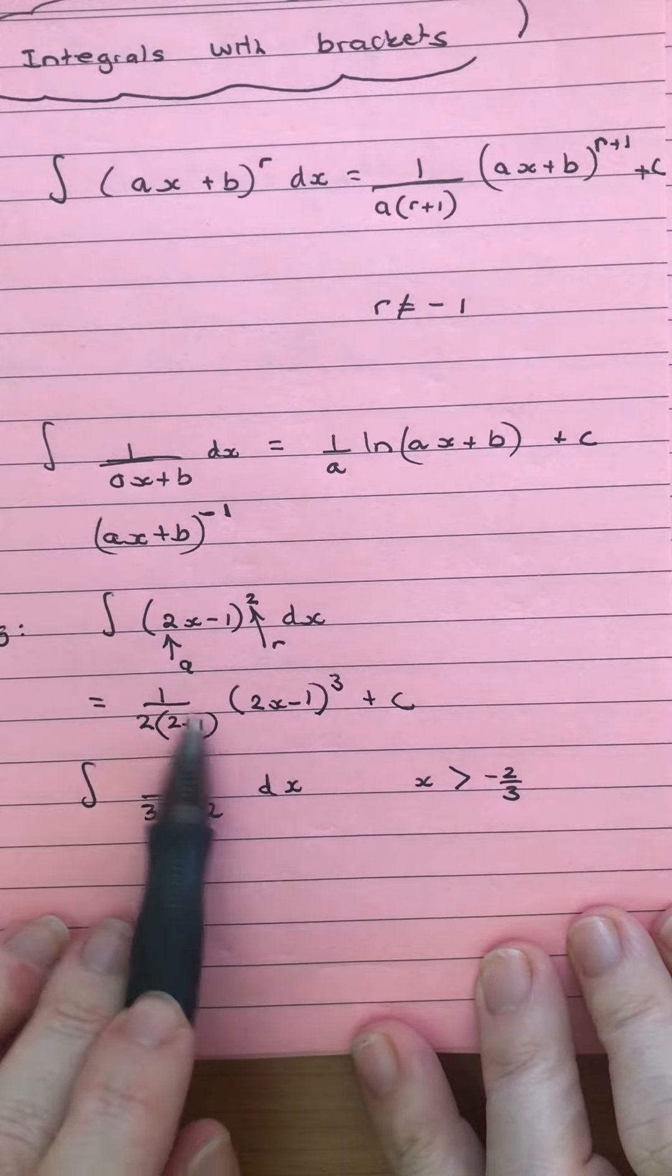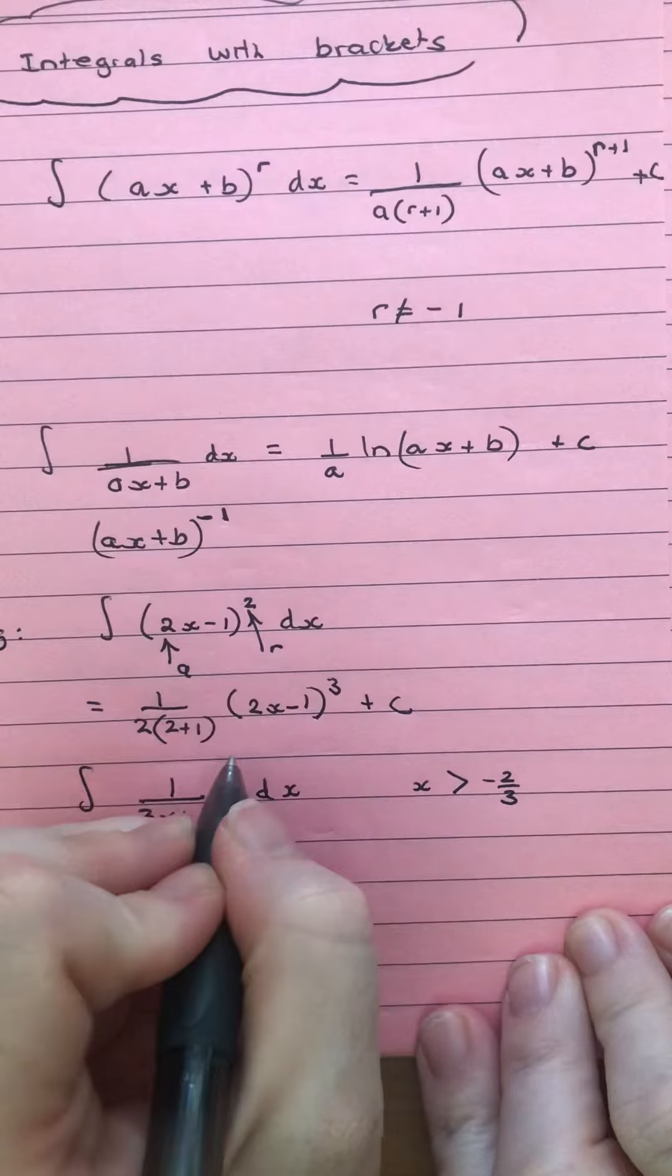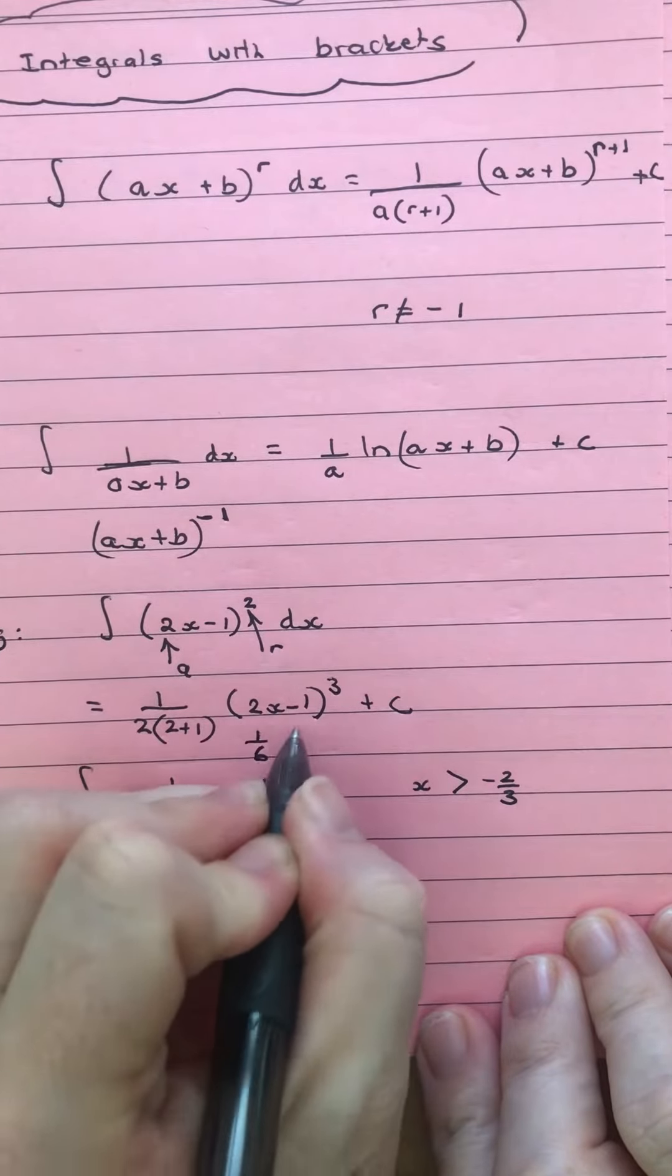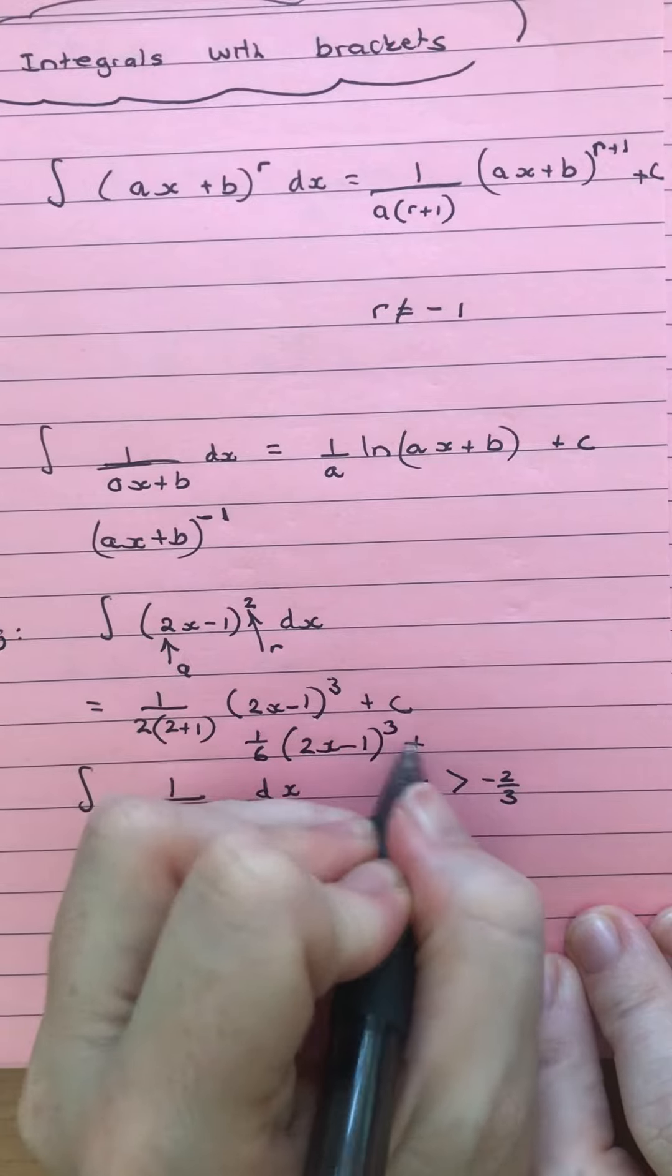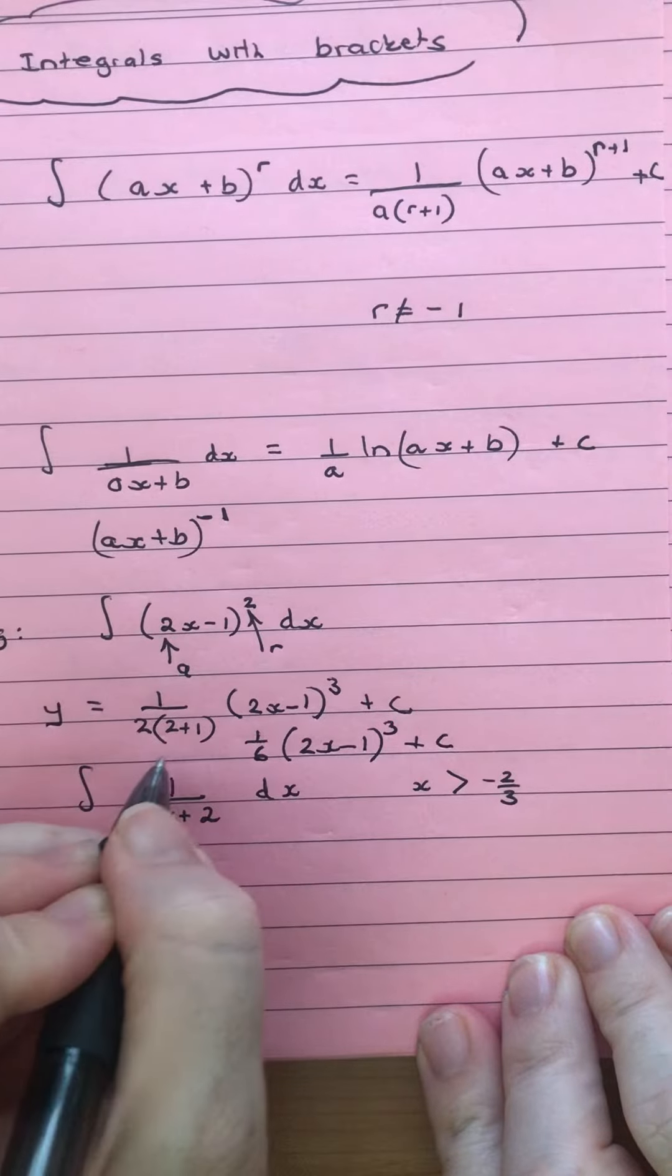Now here we've got 2 plus 1 is 3. When we multiply by 2, we get 6. So we've got 1 over 6 outside of (2x-1) to the power of 3 plus c as our final answer.